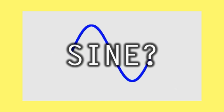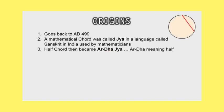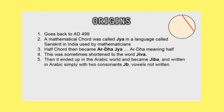The origins of the word sine can be traced back to AD 499. A mathematical chord was called Ja in a language called Sanskrit in India used by mathematicians. Half chord then became Ardha Jaya, Ardha meaning half. This was sometimes shortened to the word Jibba. Then it ended up in the Arabic world and became Jibba, and written in Arabic as JB, vowels not written.